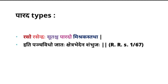Parada types — these may be considered as the Pariyaya or types of Parada. We have five kinds of Parada based on their action. Those are: Rasa, Rasendra, Suta, Parada, and Mishraka. Based on their Kshetra, the mechanism of action differs between Rasa, Rasendra, Suta, Parada, and Mishraka. We will now see each individual type in detail.